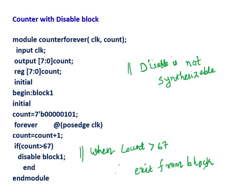This is a counter example. The initial count value is 5. Then forever, at every positive edge of clock, the count will be incremented: count equals count plus 1. So it goes 5, 6, 7, 8... and every time it will check: if count is greater than 67, till 66 it will work. Once count becomes 67, then this disable statement will be activated.